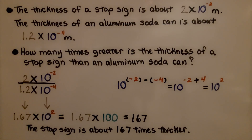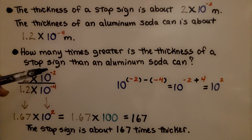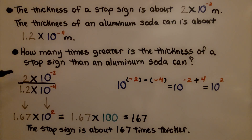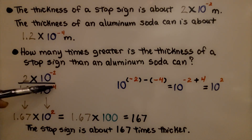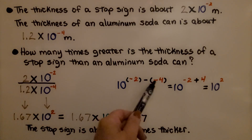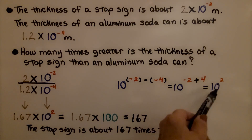The thickness of a stop sign is about two times ten raised to the negative second power meters. The thickness of an aluminum soda can is about one and two tenths times ten raised to the negative fourth meter. How many times greater is the thickness of a stop sign than an aluminum soda can? Ten to the negative second power is the greater number — negative two is closer to zero than negative four. We can write it as one big ratio: two divided by one point two gives us one point six seven. We have negative two minus negative four; adding the opposite gives negative two plus four, which gives us ten raised to the second power.